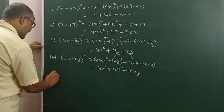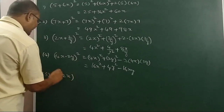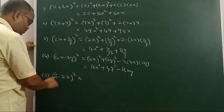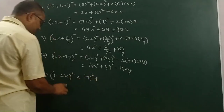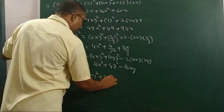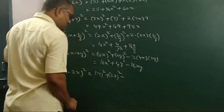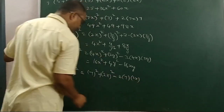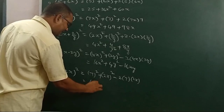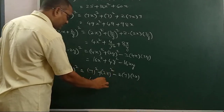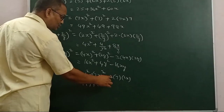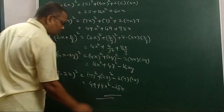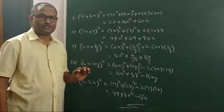Next: 7 minus 2X whole square. This is also in the form of A minus B whole square. A square means 7 square, plus B square means 2X whole square, minus 2AB means 2 into 7 into 2X. That equals 49 plus 4X square minus 28X. So these are the examples of A plus B whole square and A minus B whole square.